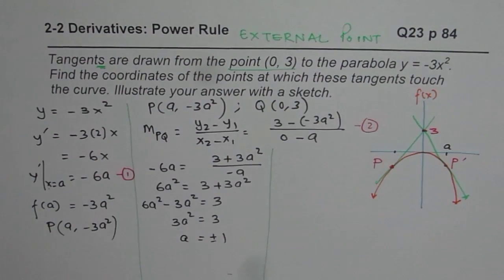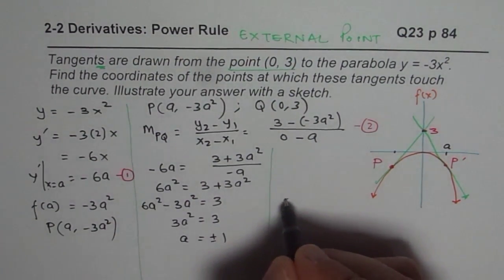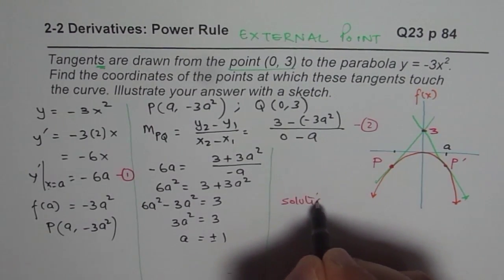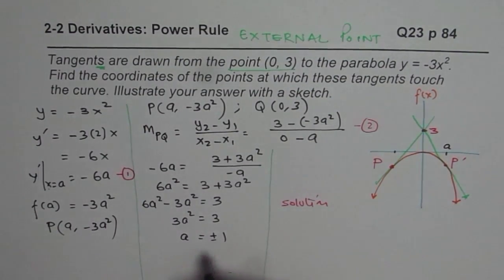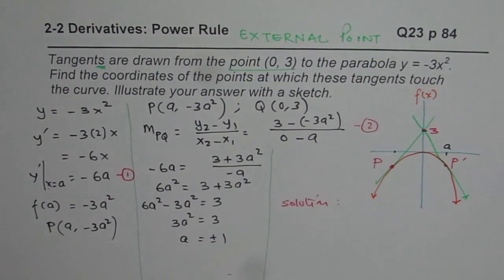So that is how we actually solve for A. And therefore, we can write down now our answer. The solution is that the point P, so there are two points. The solution is that the points are,